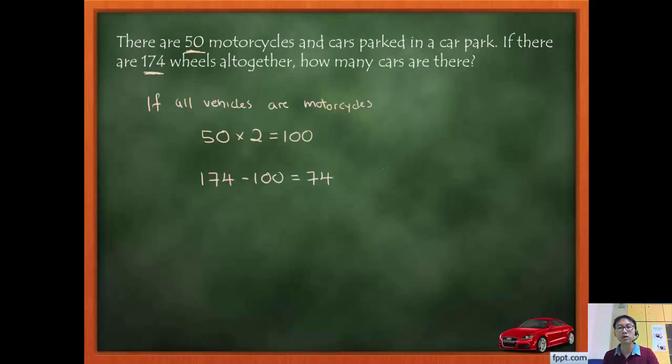So these 74 extra wheels will come from cars, because if this is a car, these two wheels have already been taken into account when I suppose all are motorcycles. So this 74 must come from the other set, the other two wheels. So I take 74, I divide by 2, and that will give me 37. So I know that I have 37 cars.